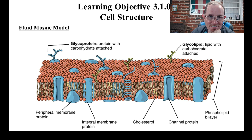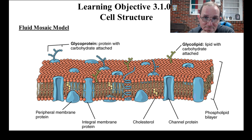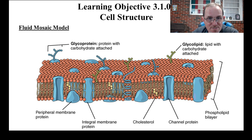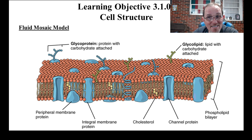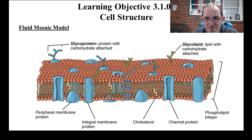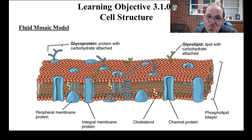These are proteins that are embedded in or on the plasma membrane. Some of them, like these peripheral proteins, are either on the outside or the inside — they don't go all the way through. Then you've got integral membrane proteins that go all the way through. Some of these guys are going to be channels. I told you that charged things can't come in, but sometimes we have to bring charged things in or out, so we have to have a channel to allow them to do that.